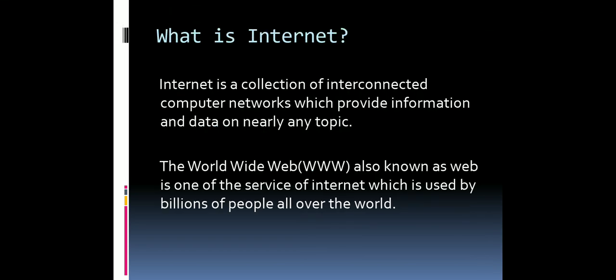First of all, what is the internet? The internet is a collection of interconnected computer networks which provides information and data on nearly any topic. A computer network is a medium or arrangement connecting two or more computers to share and exchange information and data. If lots of computer networks are interconnected with each other, they form the internet. Through the internet we can discuss any topic, share information, and send and receive data throughout the world in a very short amount of time.